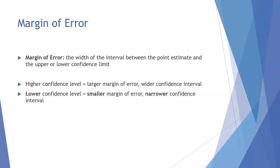I'm only 40% confident that it's somewhere between 80 and 90 degrees outside. So I have a lower confidence level now, but that allows me to have a smaller margin of error and a more narrow confidence interval.